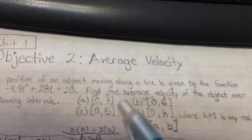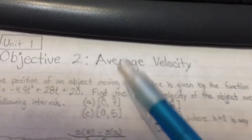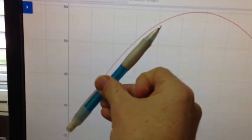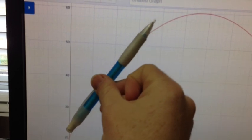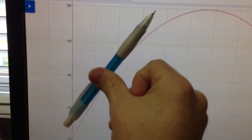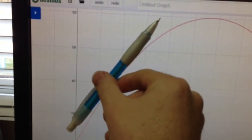is you could actually find the instantaneous velocity. We learn that later on in the chapters. So basically that secant line is just getting closer and closer to just touching that line at one point. That would be your instantaneous velocity. So that's why this is very helpful.